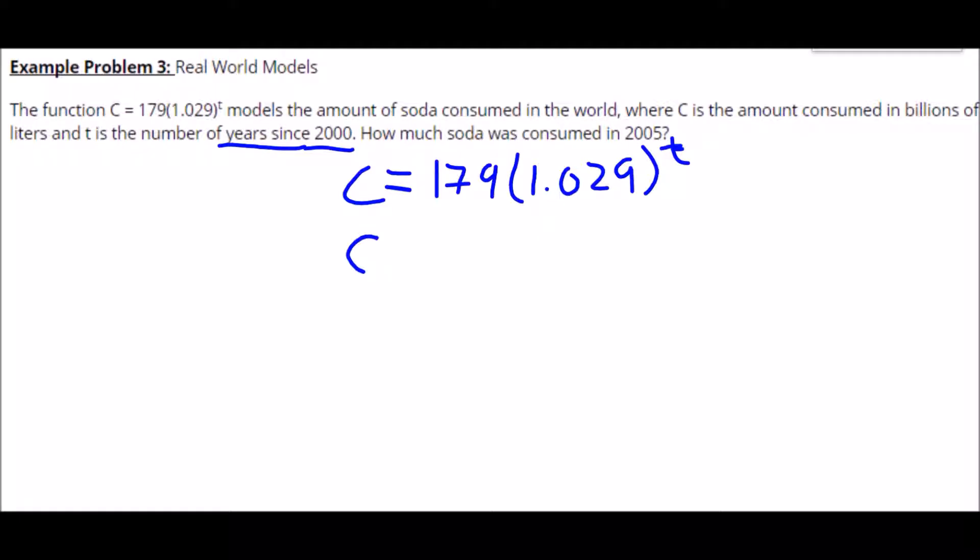So all we have to do is use this function, 179 times 1.029 to the t power, and plug in t equals 5, which represents the years from 2000 to 2005, and evaluate this using a calculator.